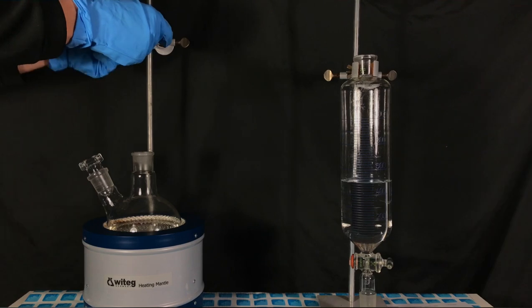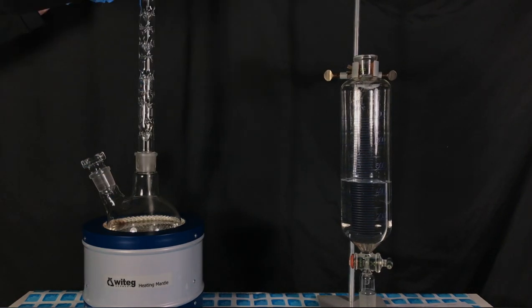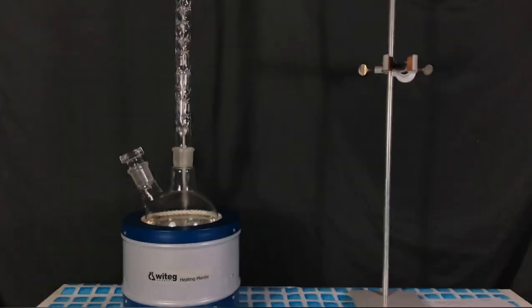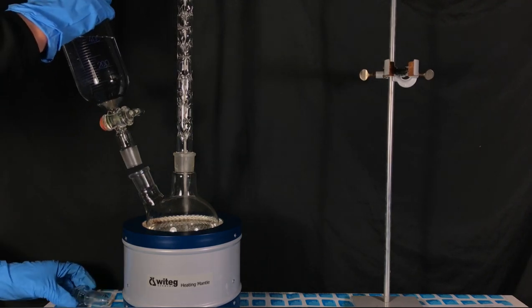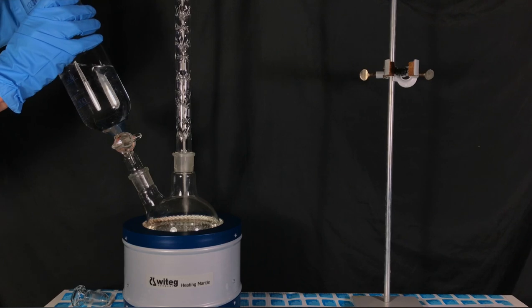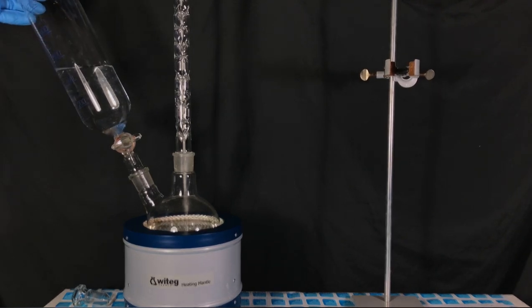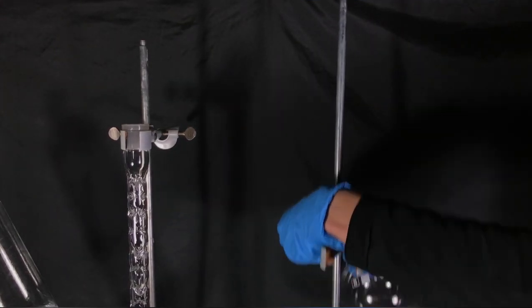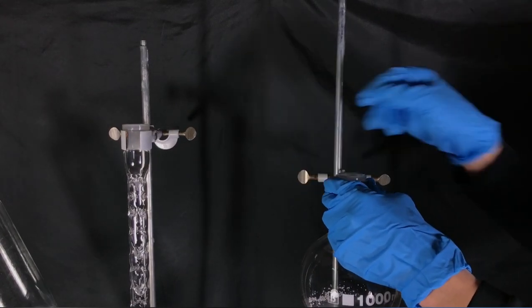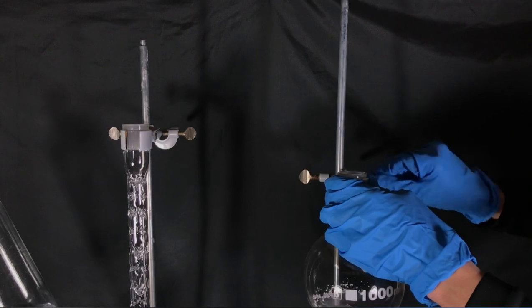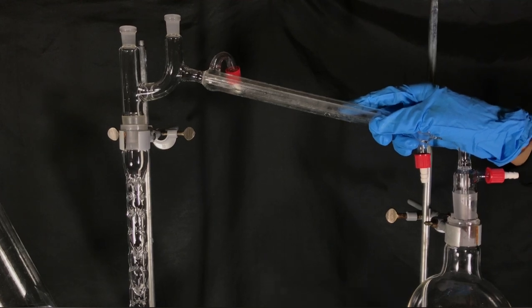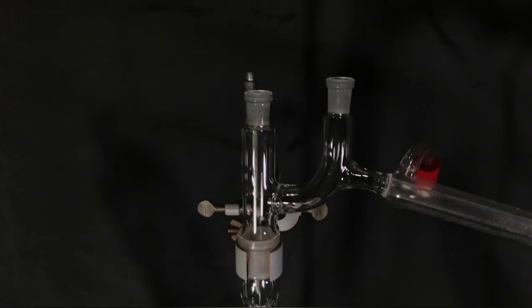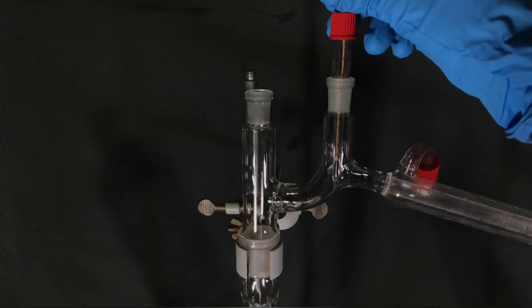We continued setting up the apparatus. More clamps were added and a Vigreux column. The column enables better separation and better separation is equivalent to more purity. The addition funnel was placed on the second neck of the round bottom flask. As a drying agent, anhydrous calcium chloride was used. The calcium chloride was left in the receiving flask straight from the beginning. Approximately 10 grams were used. A distillation bridge was connected. The two ground glass joints were stoppered with a thermocouple and with a glass stopper.